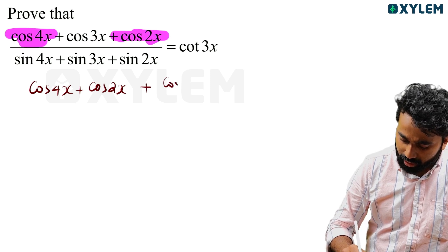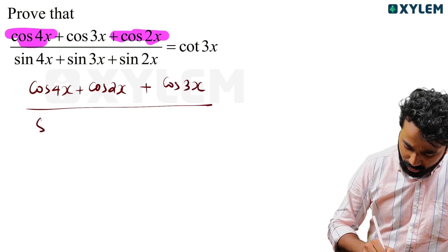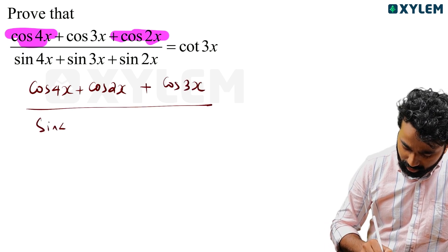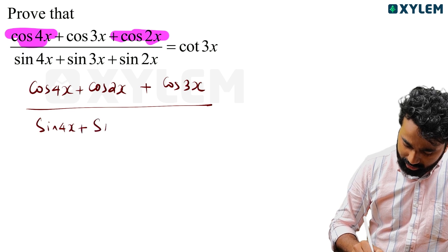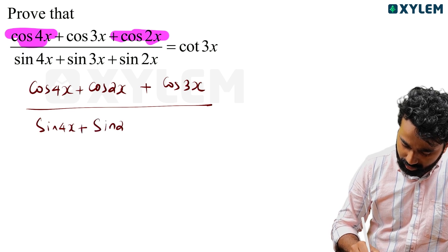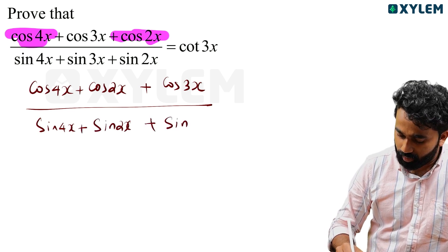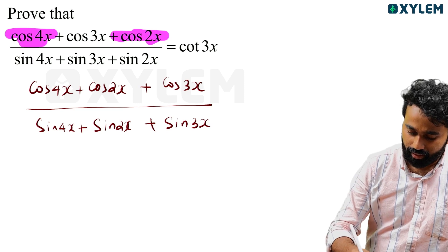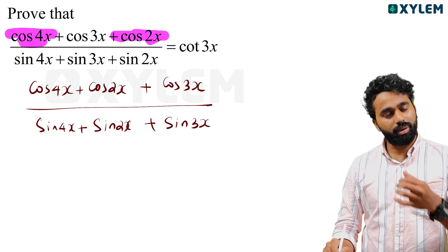Take cos 4x plus cos 2x plus cos 3x divided by sin 4x plus sin 2x plus sin 3x. This is equal to cos 3x — I will prove it.